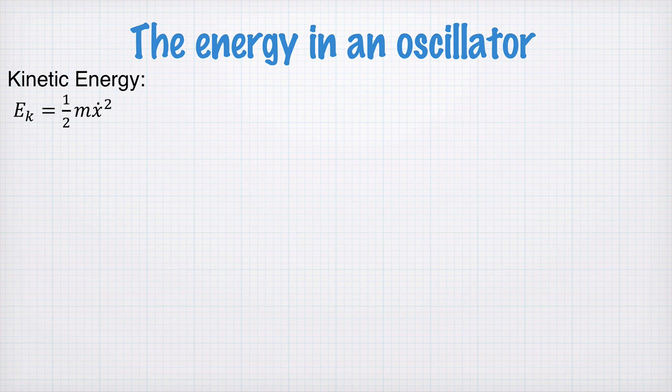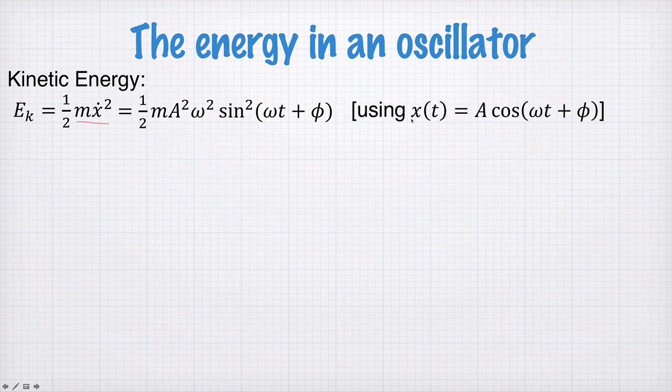So let's think about the kinetic energy first. Kinetic energy is very simply given by half mv squared. I've written v as the derivative of x here. And we can substitute in our solution for x, A cos(ωt + φ), and take its derivative.